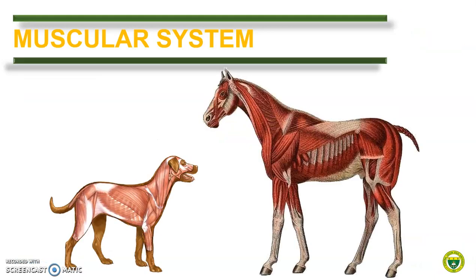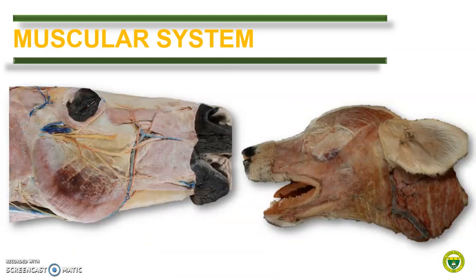As early as now, it is important to point out that the general feature of the muscular system is the same for most of the domestic animals. However, some modifications are present to fit the locomotory behavior of the animals. For the quadrupeds, the muscular system is designed to support the lack of true joint connecting the thoracic limb with the trunk.